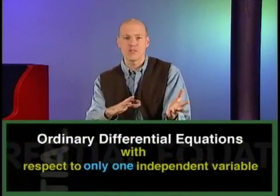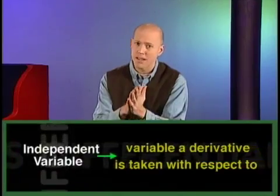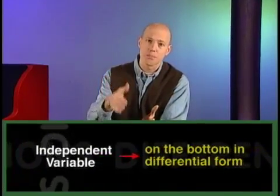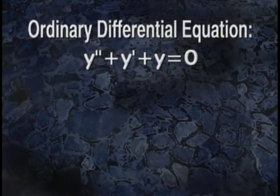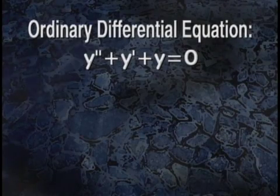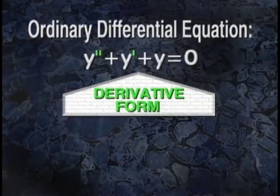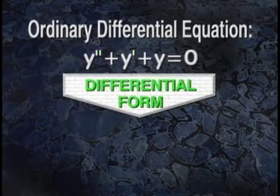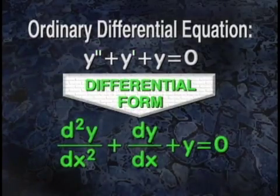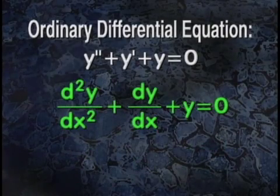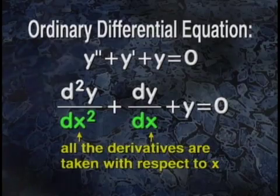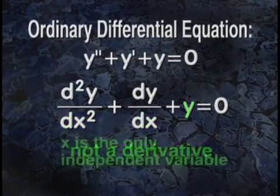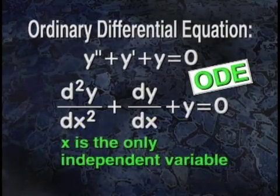Now, let's decipher what I just said. Remember that the independent variable is the variable a derivative is taken with respect to, or in other words, the one that is on the bottom in differential form. An example of an ordinary differential equation is y double prime plus y prime plus y equals 0. This is written in the derivative form. See those primey things? Translating this into differential form, we get the second derivative of y with respect to x plus dy dx plus y equals 0. As you can see, all the derivatives in this equation are taken with respect to x, and the last term y is not a derivative. So x is the only independent variable, making this an ODE.